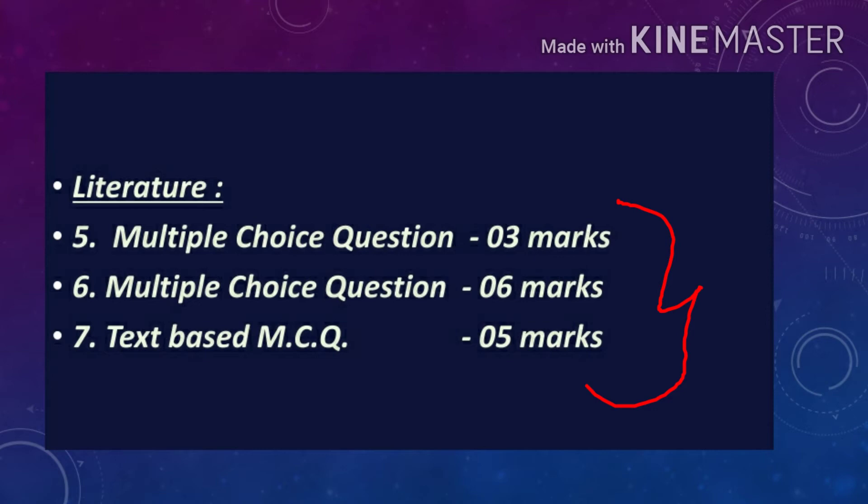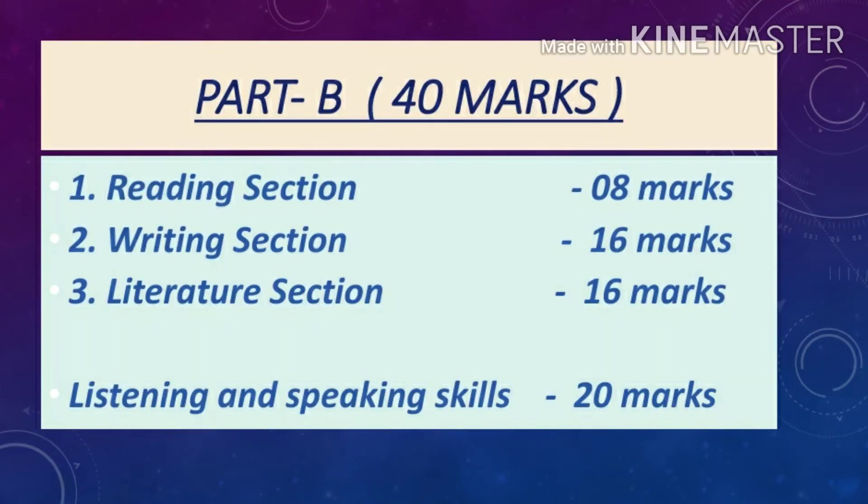Any poem will be asked and two extracts from which you have to answer only one extract. Then next is multiple choice question, 6 marks. You have to give total 3 extracts but you have to answer 2, and this is from prose from Hornbill and Snapshots. Now coming to text based MCQ, this will be 5 marks, total 6 questions in which you have to answer only 5, and it can be from prose as well as poetry also.